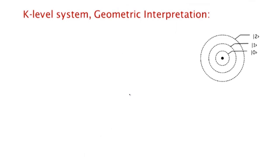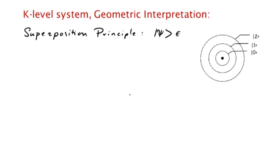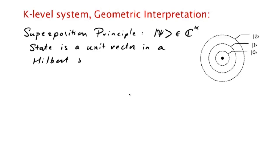Now let's look at a geometric interpretation of the quantum state. Geometrically, the superposition principle says that the state of a k-level quantum system is a unit vector in a k-dimensional complex vector space. This vector space is also called a Hilbert space.